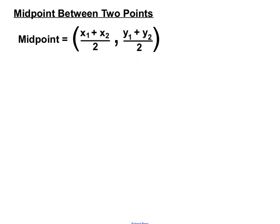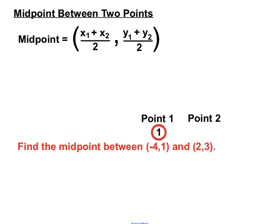Let's see how it works. To find the midpoint between the two points (-4, 1) and (2, 3), we're going to label each of these. Point 1 is the first point and Point 2 is the second point. Pretty logical stuff.